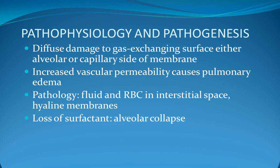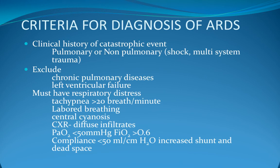ARDS is usually diagnosed by acute onset of respiratory distress, PaO2/FiO2 ratio of less than 200, and bilateral pulmonary infiltrates on chest x-ray. Diagnostic criteria include pulmonary or non-pulmonary shock or multisystem trauma, exclusion of chronic pulmonary disease and left ventricular failure. Must have respiratory distress with tachypnea more than 20 per minute, labored breathing, central cyanosis, diffuse infiltrates on chest x-ray, PO2 less than 40 mmHg on FiO2 greater than 0.6, compliance less than 50 ml per centimeter of water, and increased shunt and dead space.